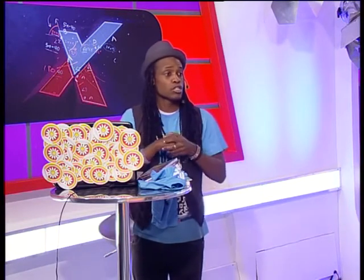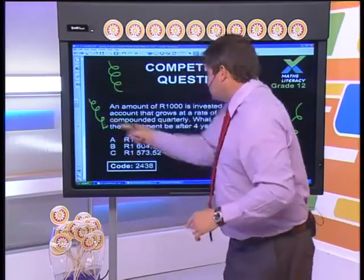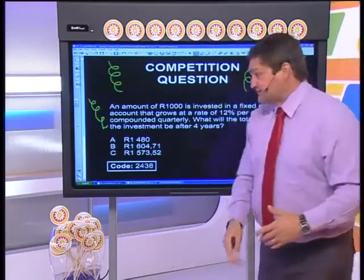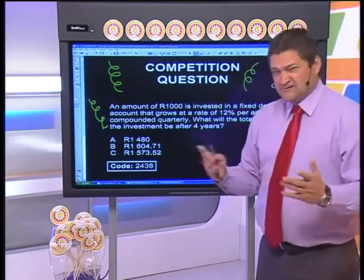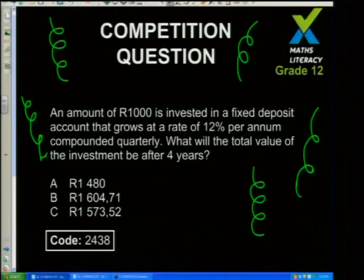Here's the challenge question. Before we look at it — I came into the studio earlier and saw flowers everywhere. It's Spring School, but to make the guys feel comfortable, I've also put in springs — real springs, like a coil spring. That's what the green squiggles are. Competition question: an amount of R1,000 is invested in a fixed deposit account that grows at a rate of 12% per annum, compounded quarterly. What will the total value of the investment be after four years?